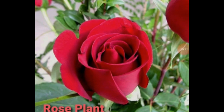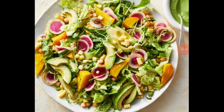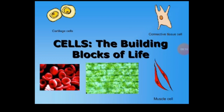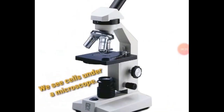You must have seen rose plants, vegetables and salad, and also your skin. All of these are made up of cells, which are the building blocks of life. We can see cells under a microscope.